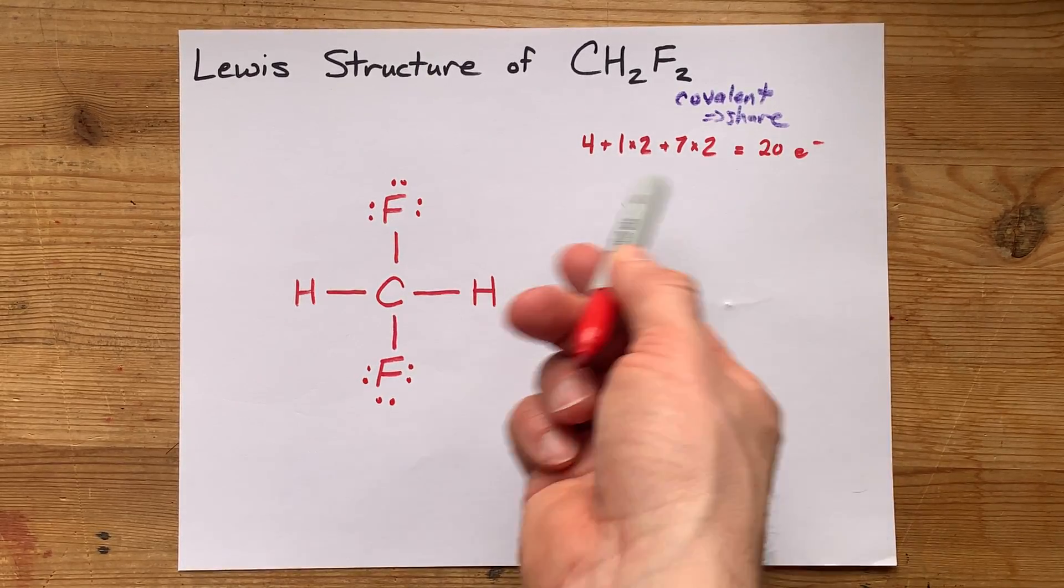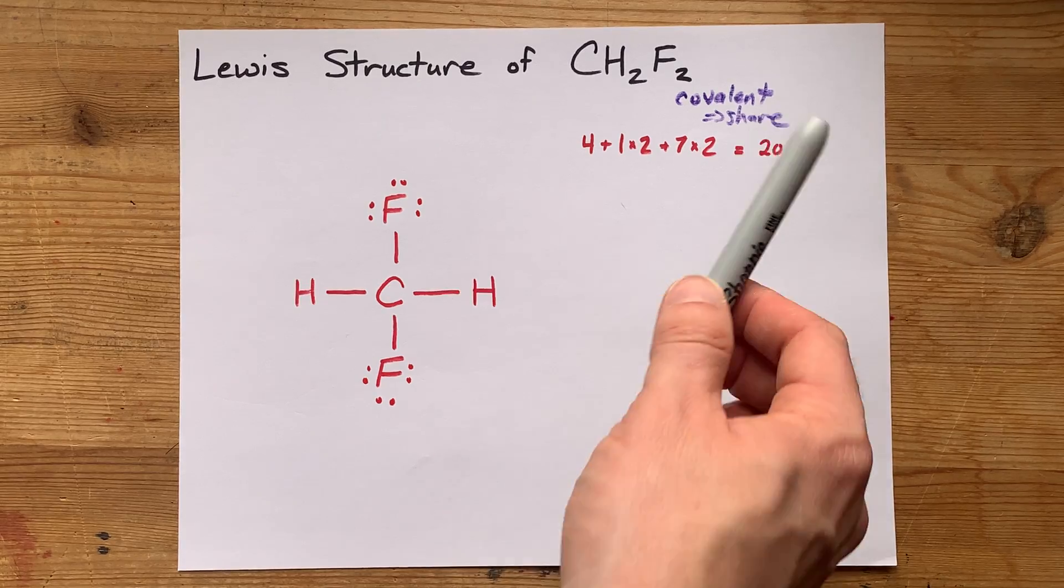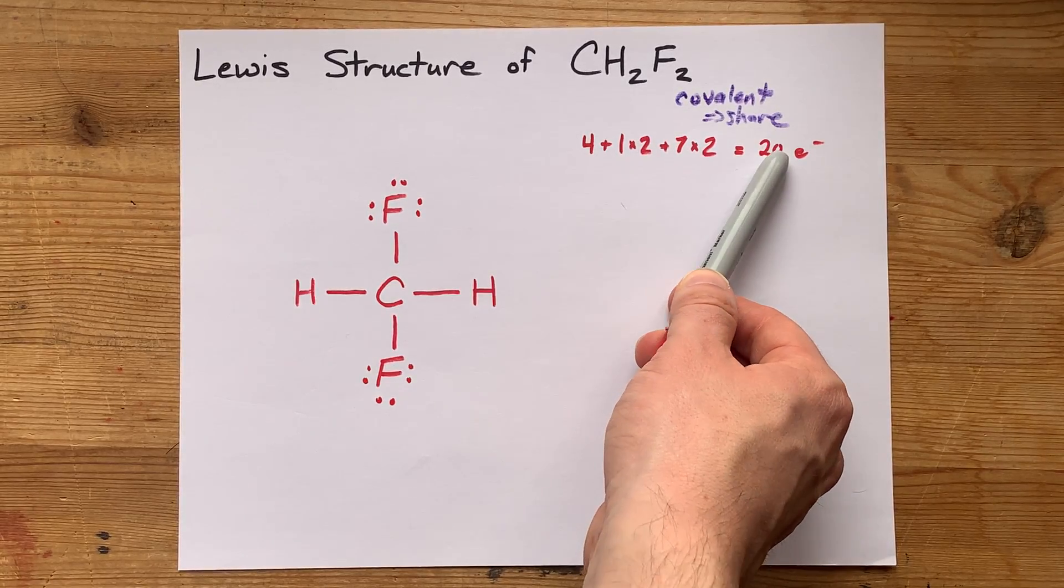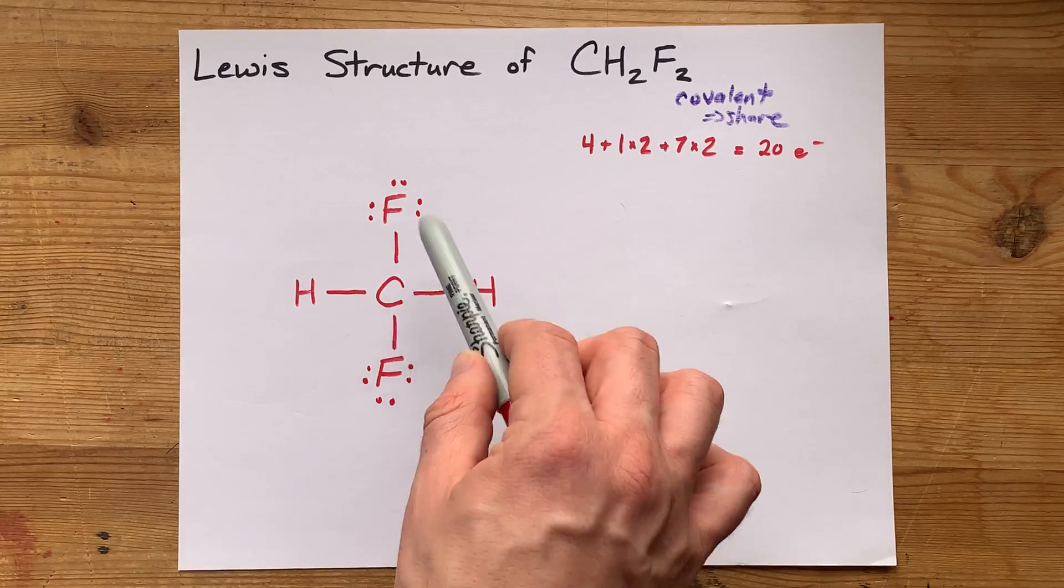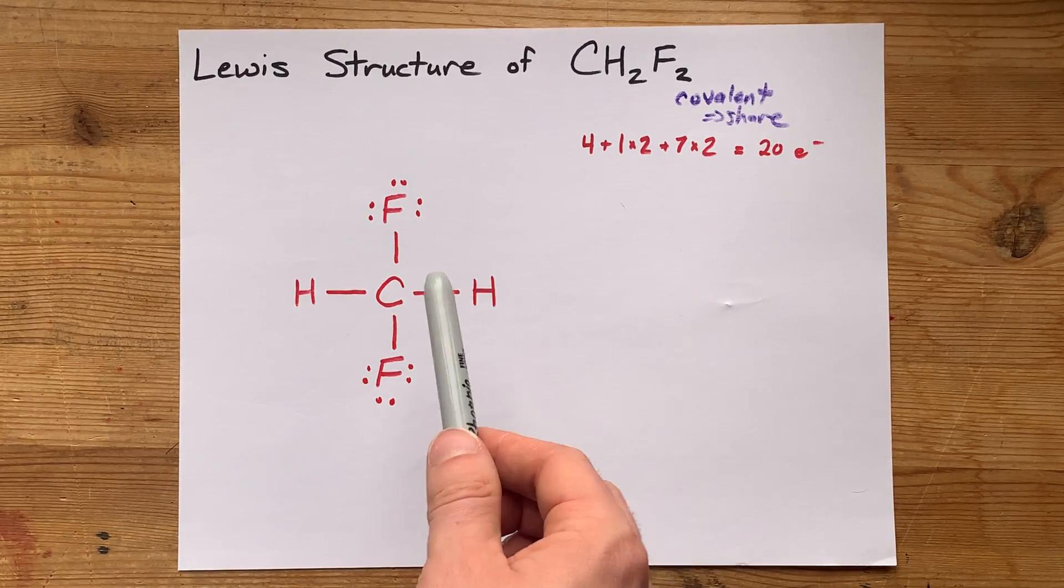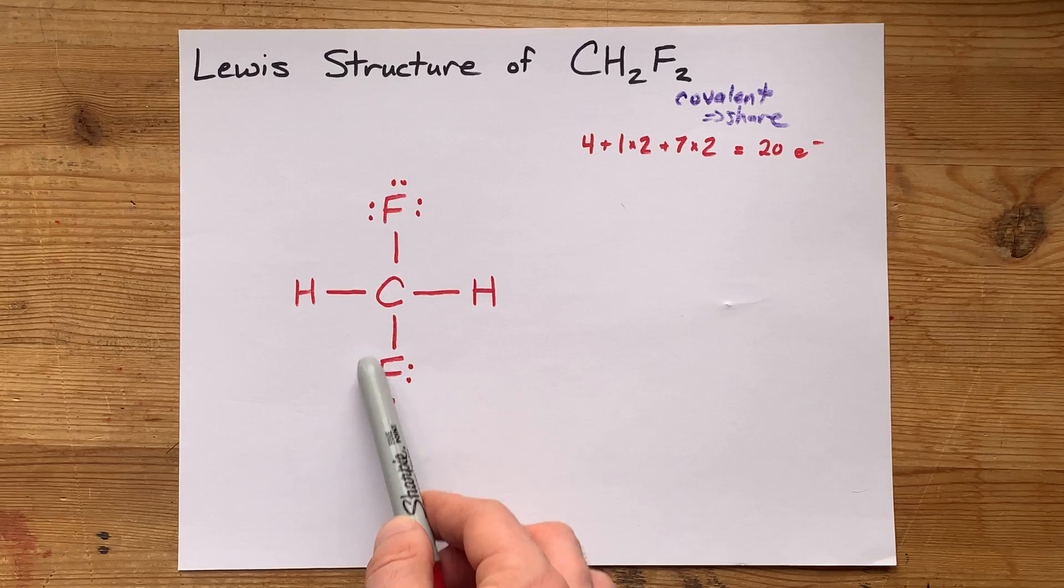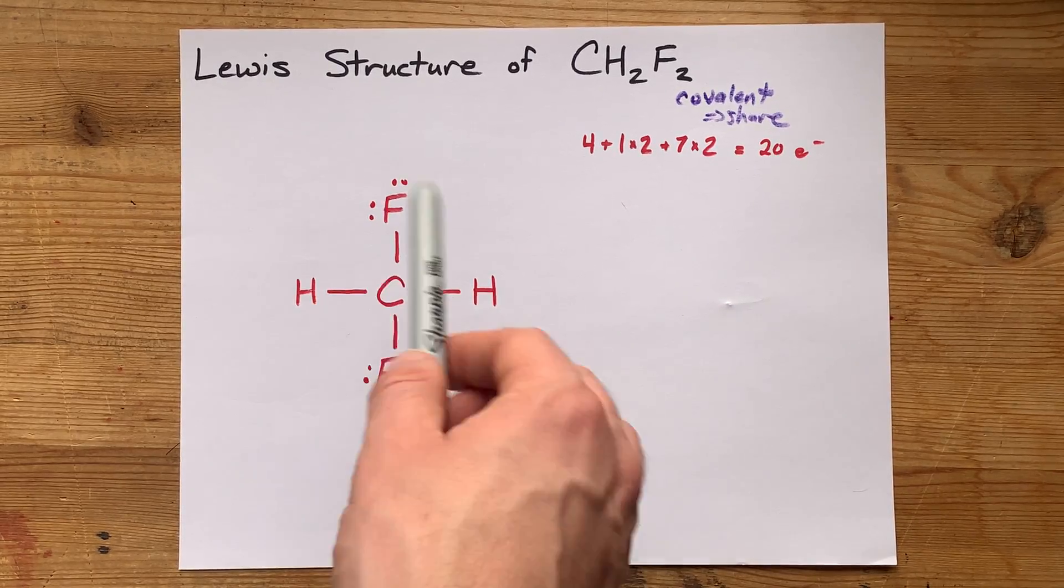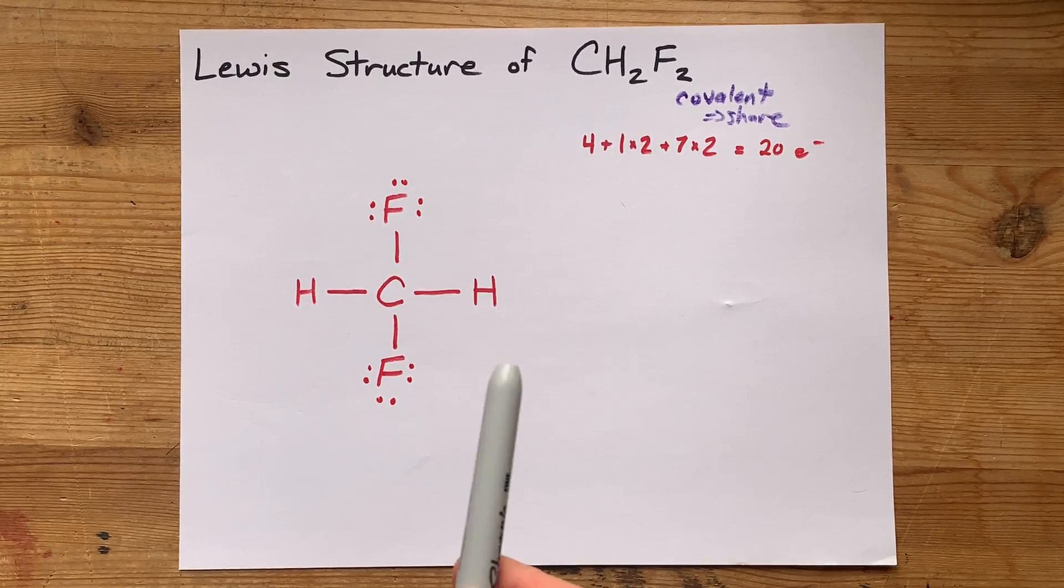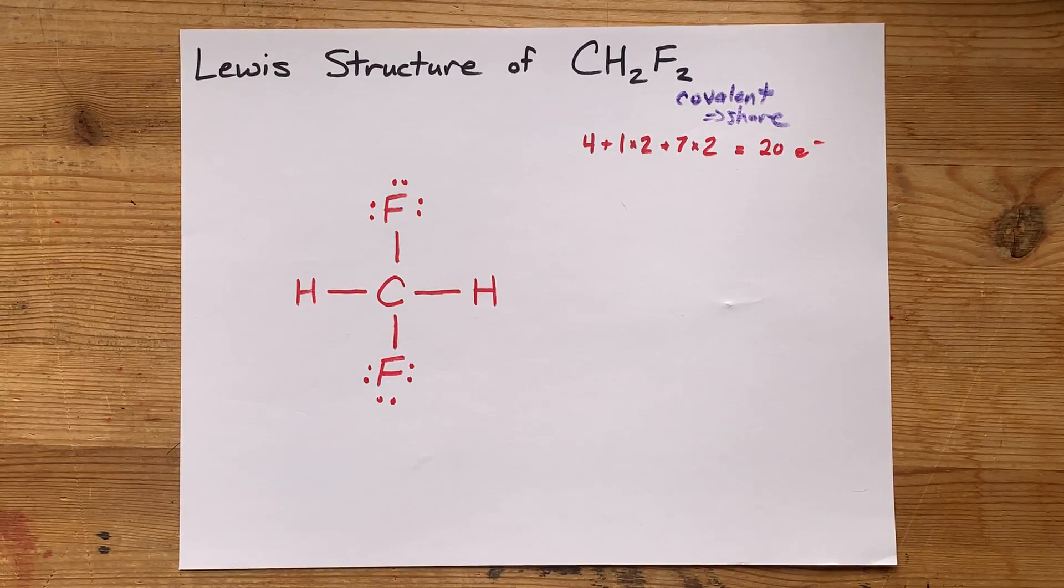If I had extra electrons left over, which I don't, I would have dumped them on the central atom. And if I didn't have enough electrons, if this wasn't enough electrons to fill these octets, I would have needed to move some around to make double and triple bonds. But that's not the case here either.